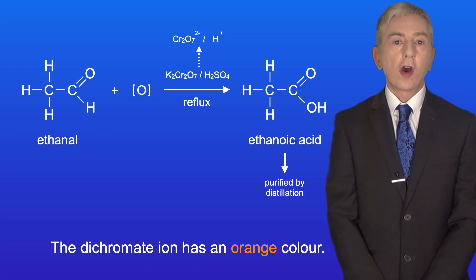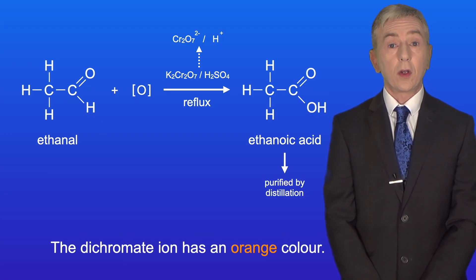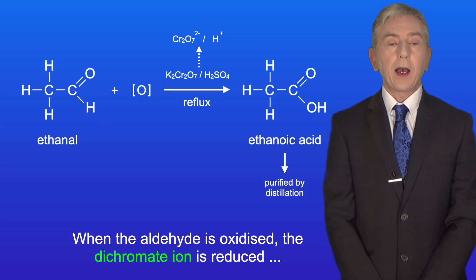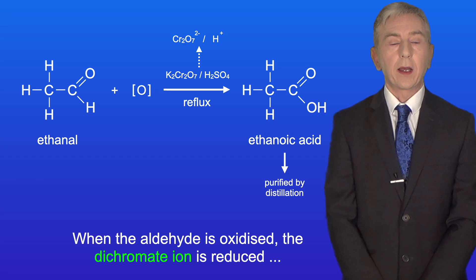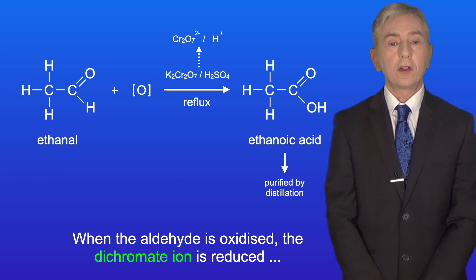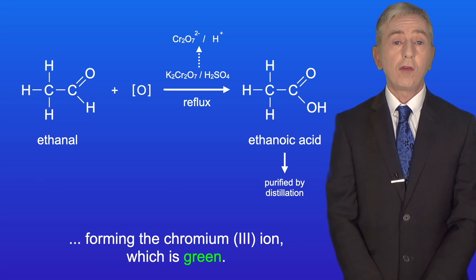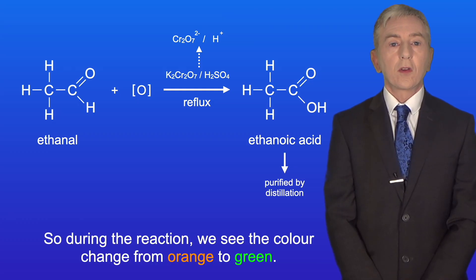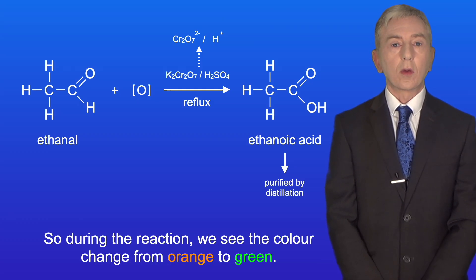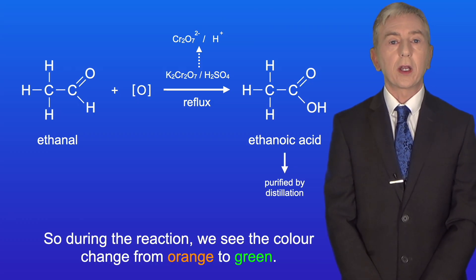The dichromate ion has an orange color. When the aldehyde is oxidized, the dichromate ion is reduced, forming the chromium-3 ion which is green. So during the reaction we see the color change from orange to green.